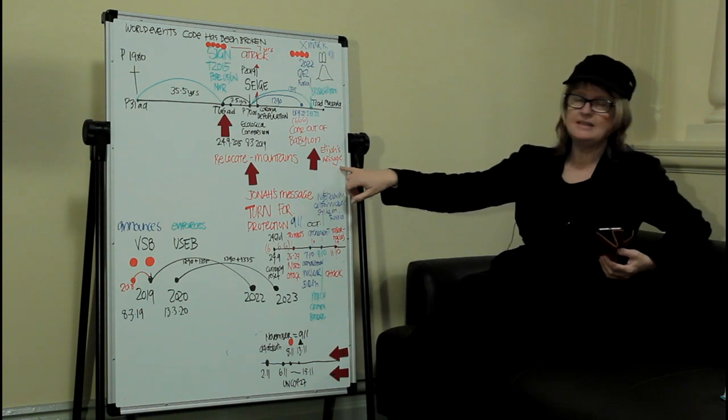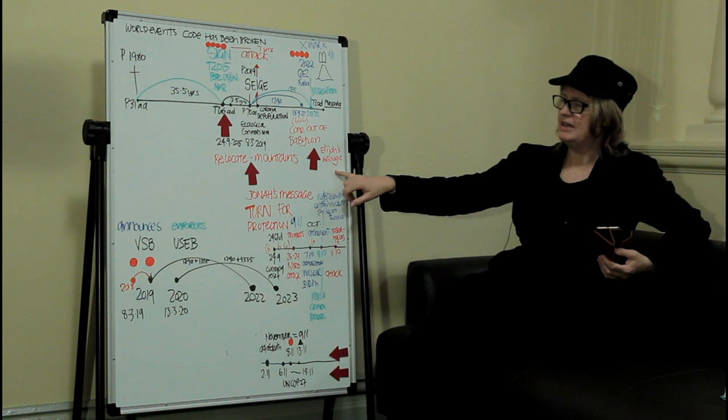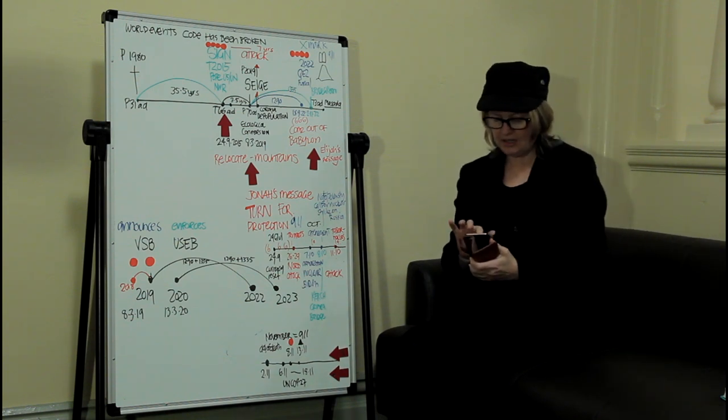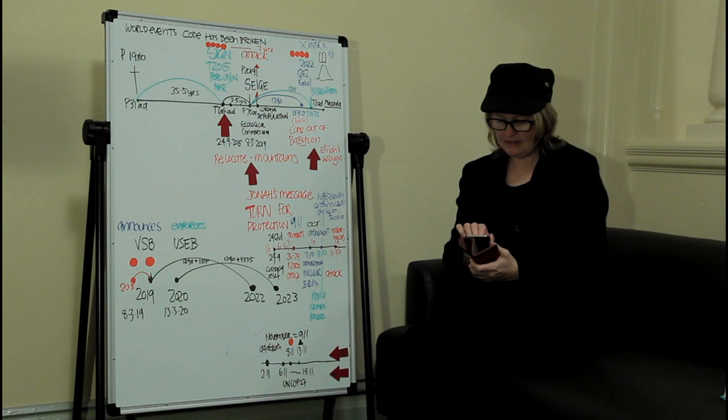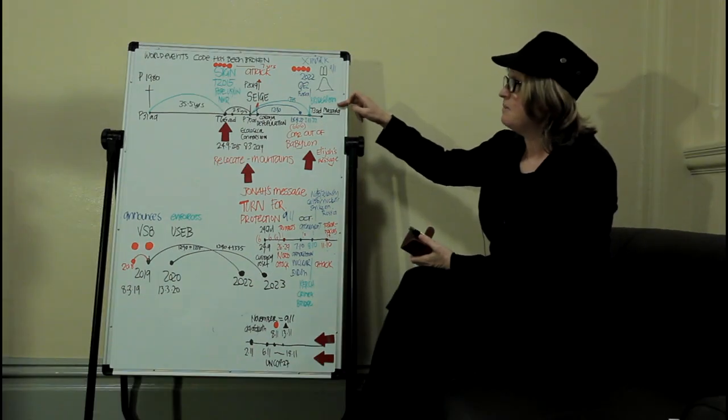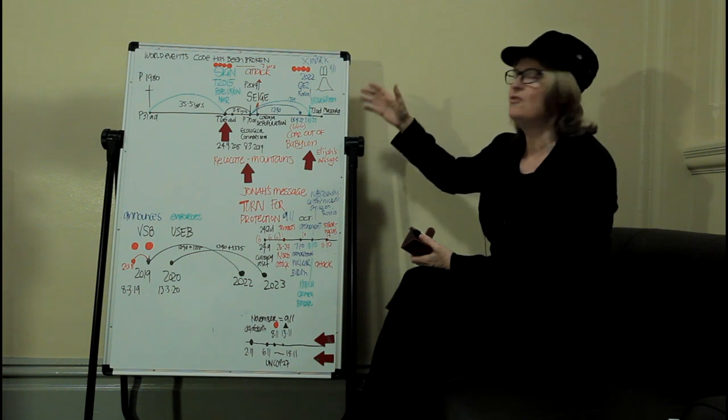And so Elijah is sent just before the return of Jesus with the call to come out of Babylon. And if we'll just quickly read the Elijah message, which is found in Malachi chapter 4, the reason why we need to hear this message is because the bridegroom's coming. And the bridegroom is Jesus coming in the power of the Spirit. He came to deliver the slaves back in Egypt. And he came in a fiery pillar.